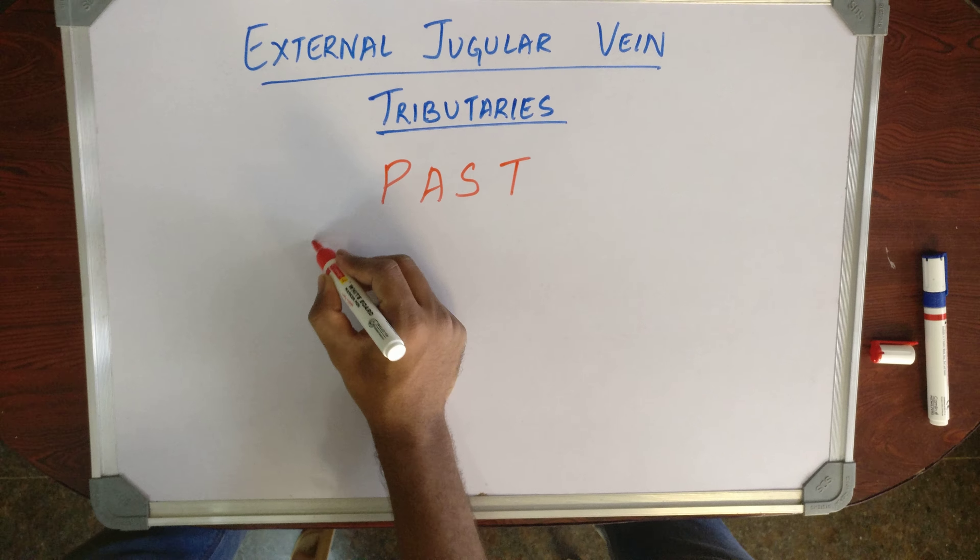P stands for Posterior External Jugular vein.